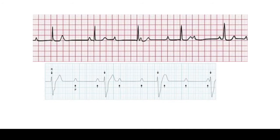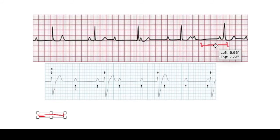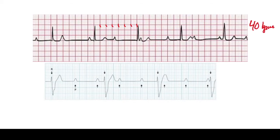Looking at the top rhythm strip, measuring P-to-P intervals shows the atria beating at their own rate with no association to the QRS complexes. The QRS complexes are also beating independently at around 40 beats per minute. Since 40 bpm is on the cusp of junctional and ventricular rates, the narrow complex QRS tells us this rhythm is likely coming from near the AV node and still traveling down the His-Purkinje system — making this a junctional escape rhythm.